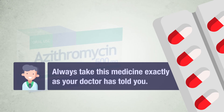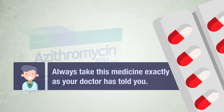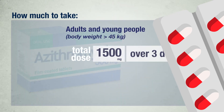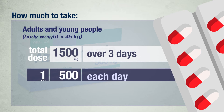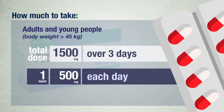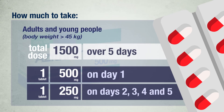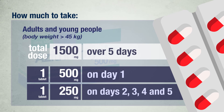Always take this medicine exactly as your doctor has told you. Check with your doctor or pharmacist if you are not sure how much to take. Adults and young people with a body weight of 45 kilograms and above: the usual total dose is 1500 milligrams. This can be taken in two ways. Over three days: one 500 milligrams tablet each day. Over five days: one 500 milligrams tablet on day one, and then one 250 milligrams tablet on days two, three, four and five.